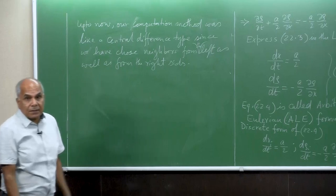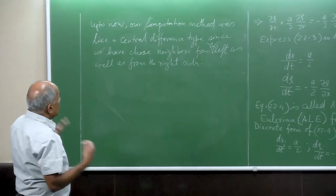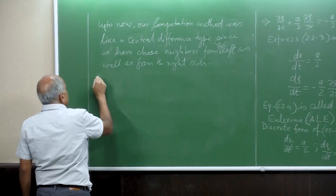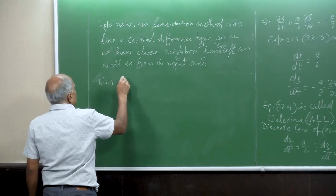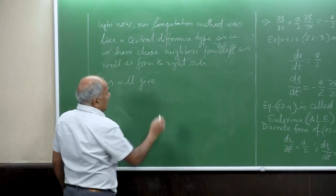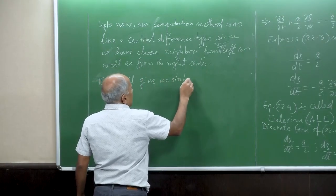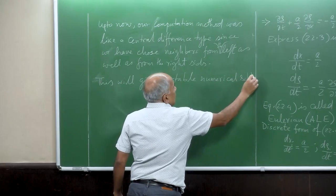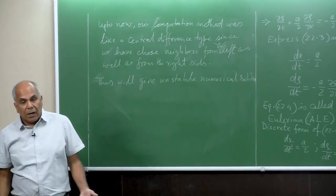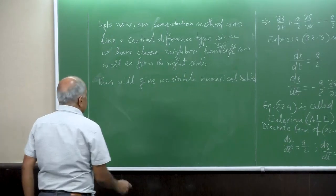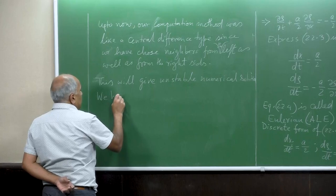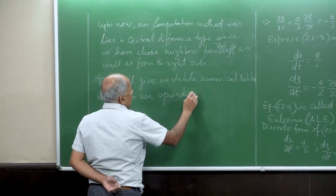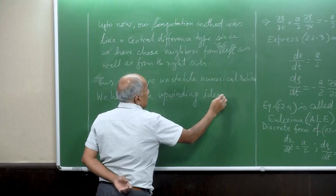Therefore it is a standard central difference scheme, and this will give an unstable solution — our solution will blow up. So we need to use the upwinding idea.